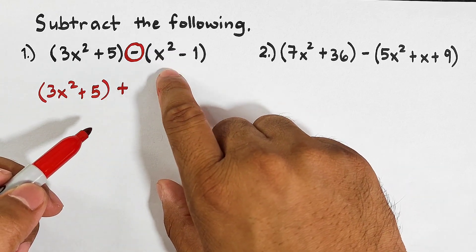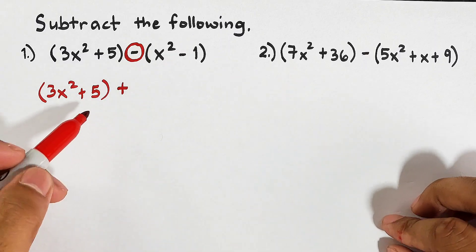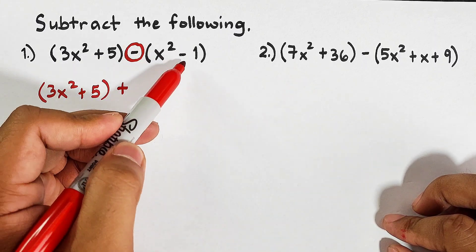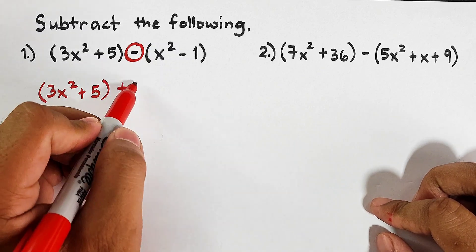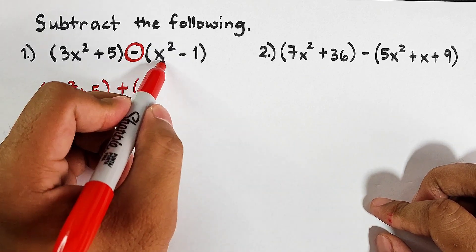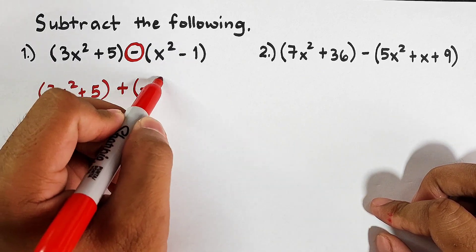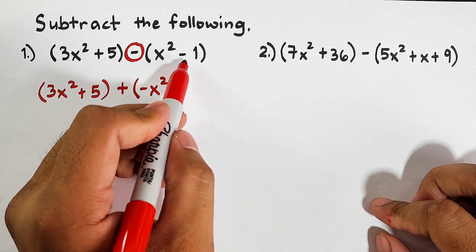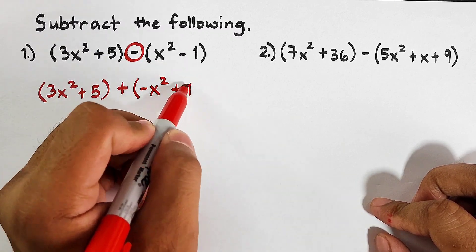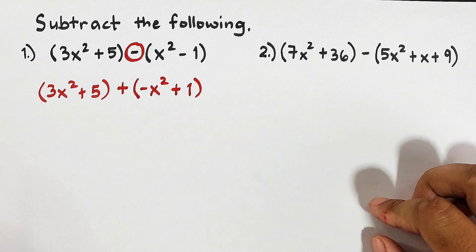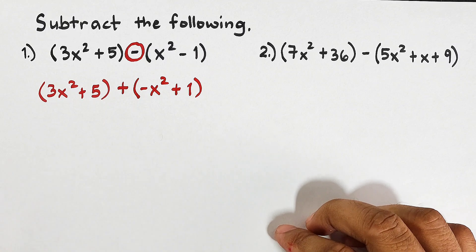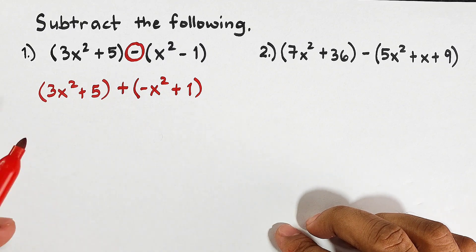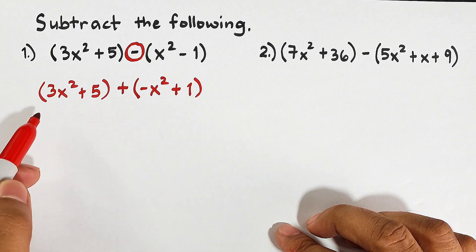Next, all the signs of the terms of the second polynomial will be changed. If a term is positive it will become negative; if it is negative it will become positive. So the second polynomial becomes negative x squared plus 1. As I mentioned earlier, subtracting polynomials leads you to addition of polynomials, so now we can do addition of polynomials.